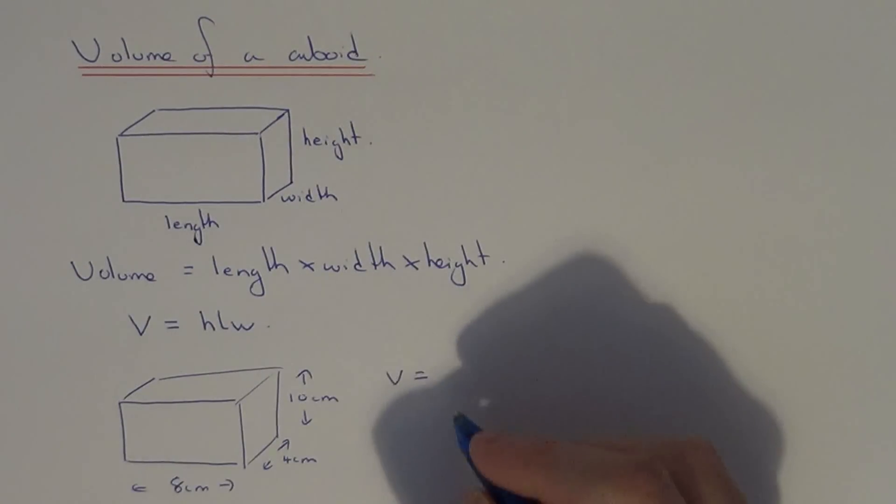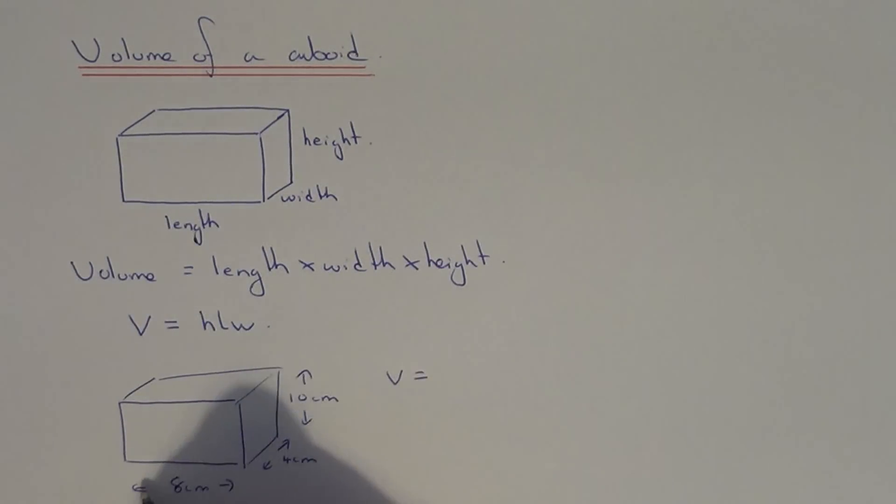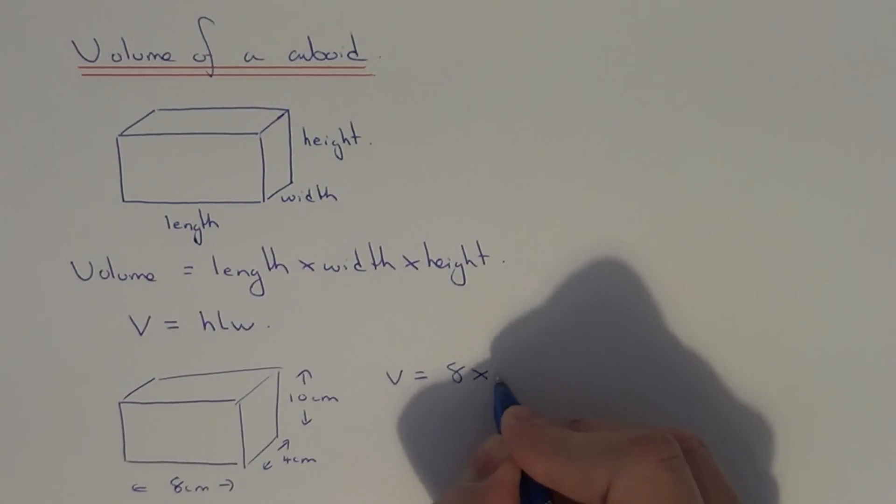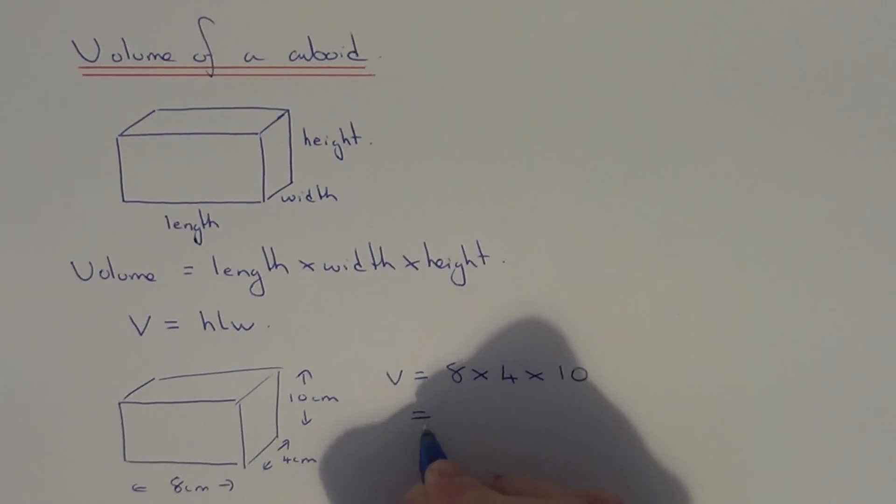Because all the different ways will give you the same answer, all we need to do is 8 times 4 times 10. Again, do it in any order. So 8 times 4 is 32, times by 10 gives us 320.